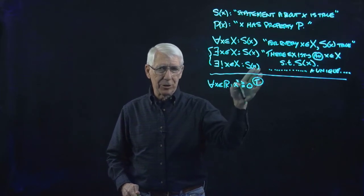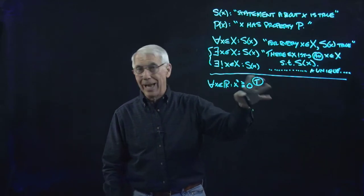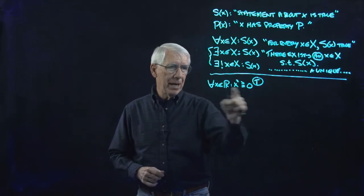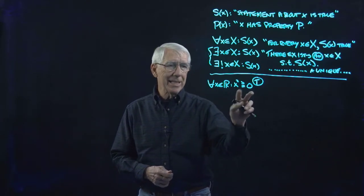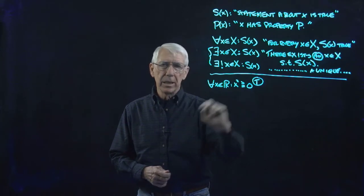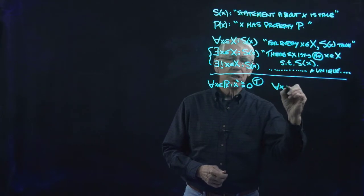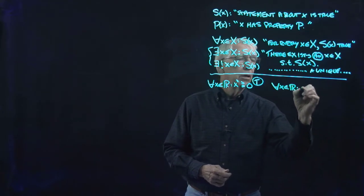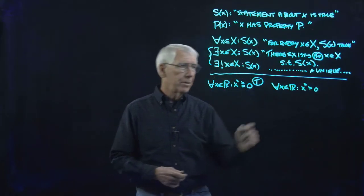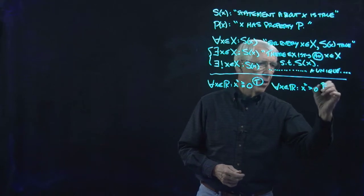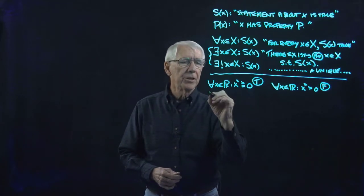This statement is a true statement about the real numbers. I'll circle T if it's true and F if it's false. Now let's look at: for every X in ℝ, X squared is positive. That's false, because zero is a real number and zero squared is not positive.